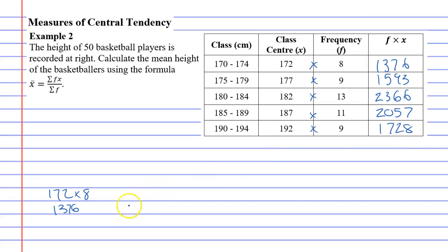Now, once you've got all these numbers, hopefully you'll notice that you would then actually add them all together. 1,376 plus 1,593 plus 2,366 plus 2,057 plus 1,728 comes out to 9,120. So if we were to add all of these up, we would get 9,120.